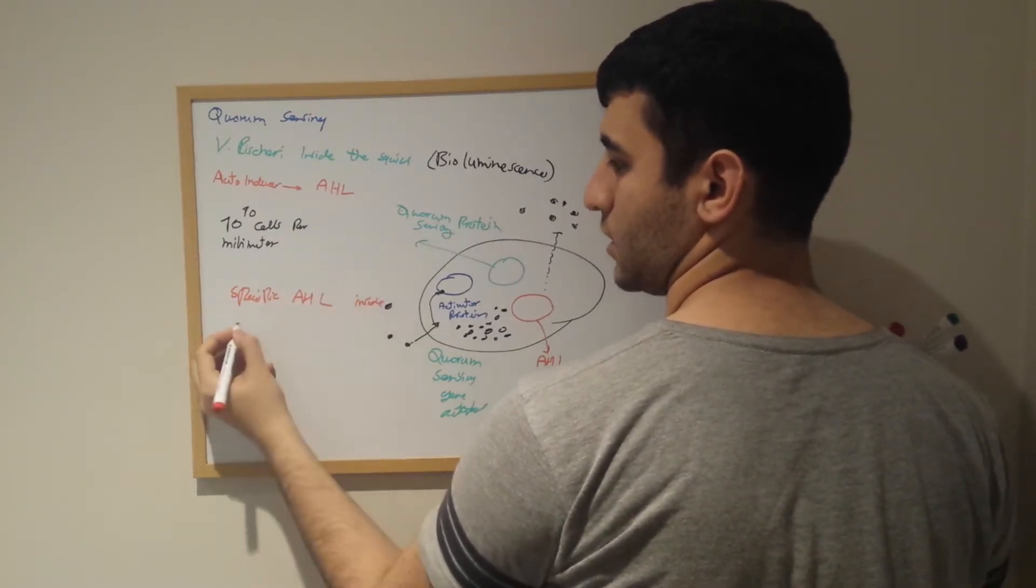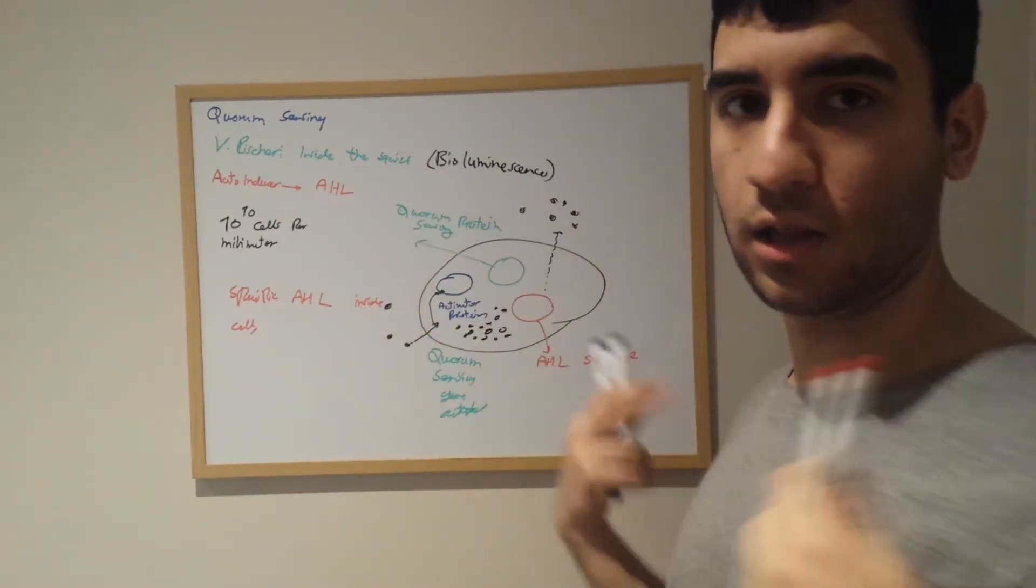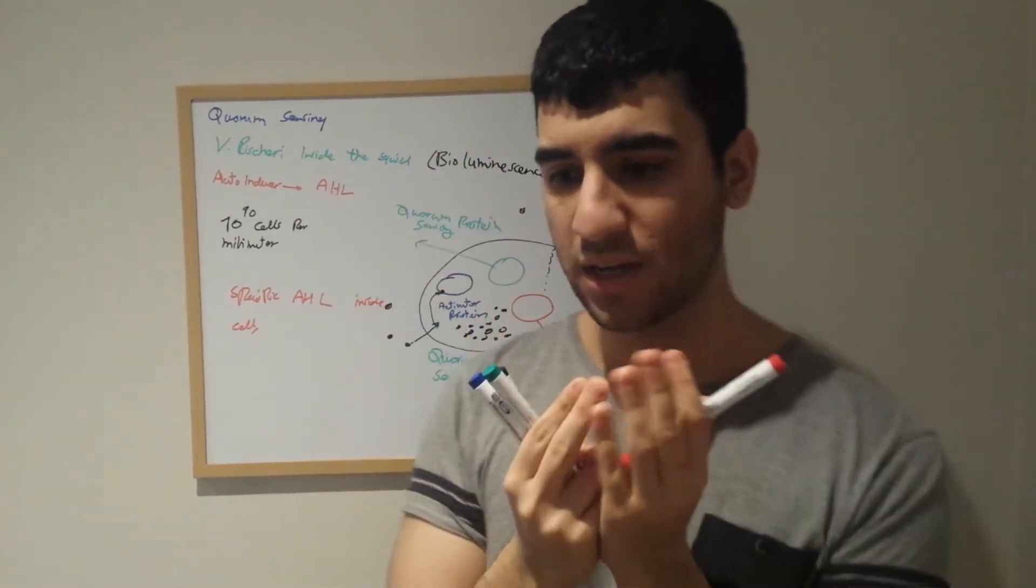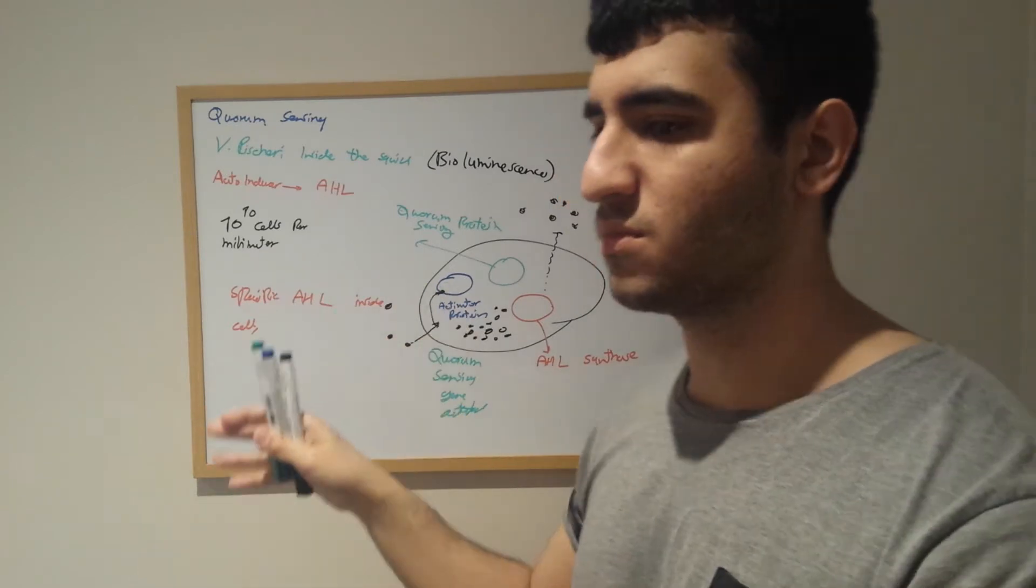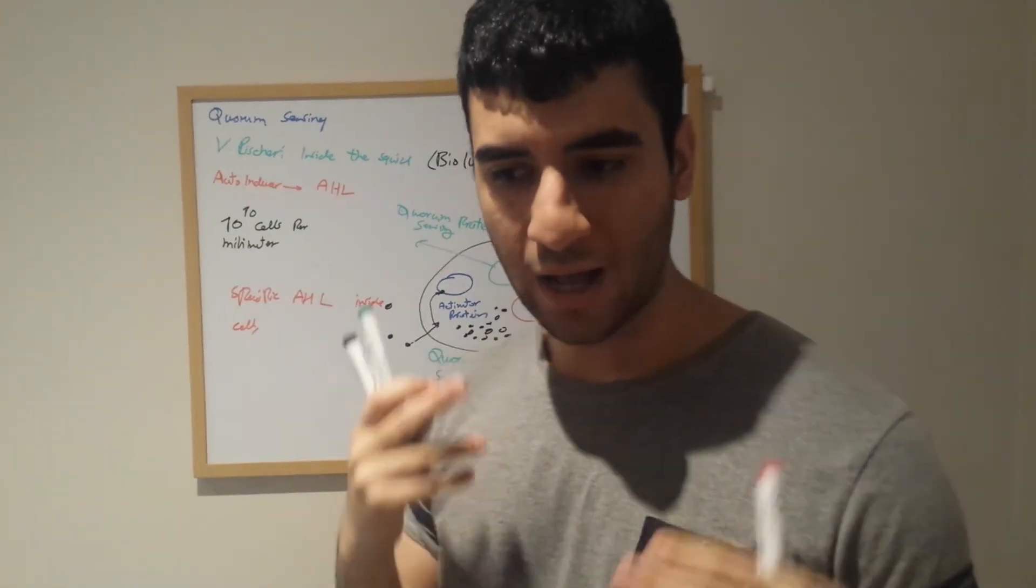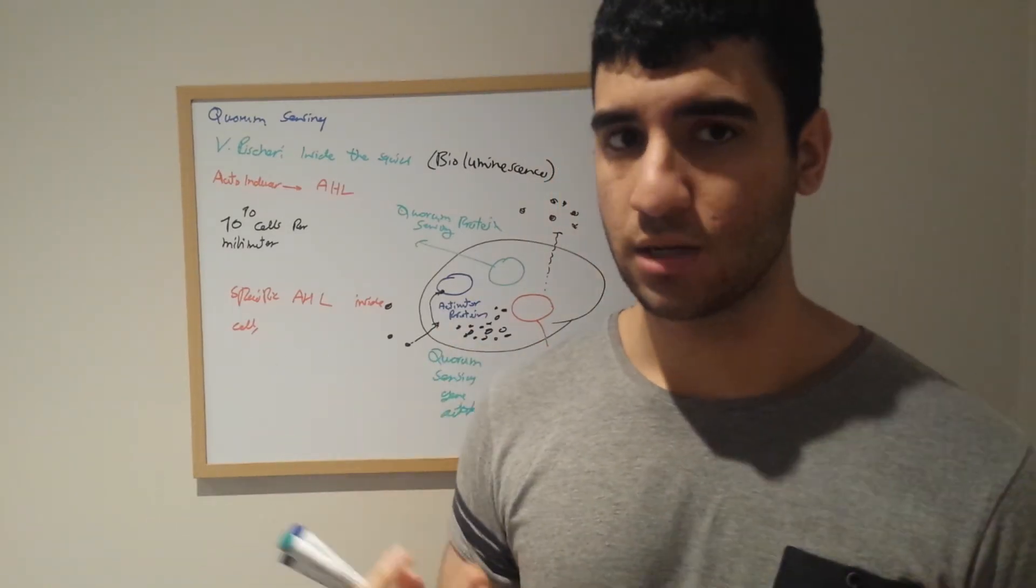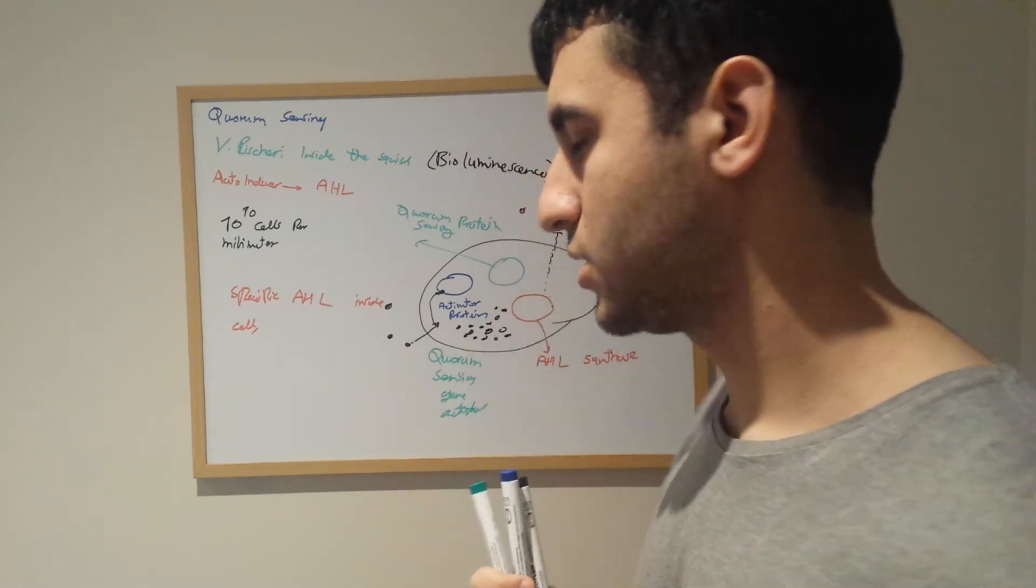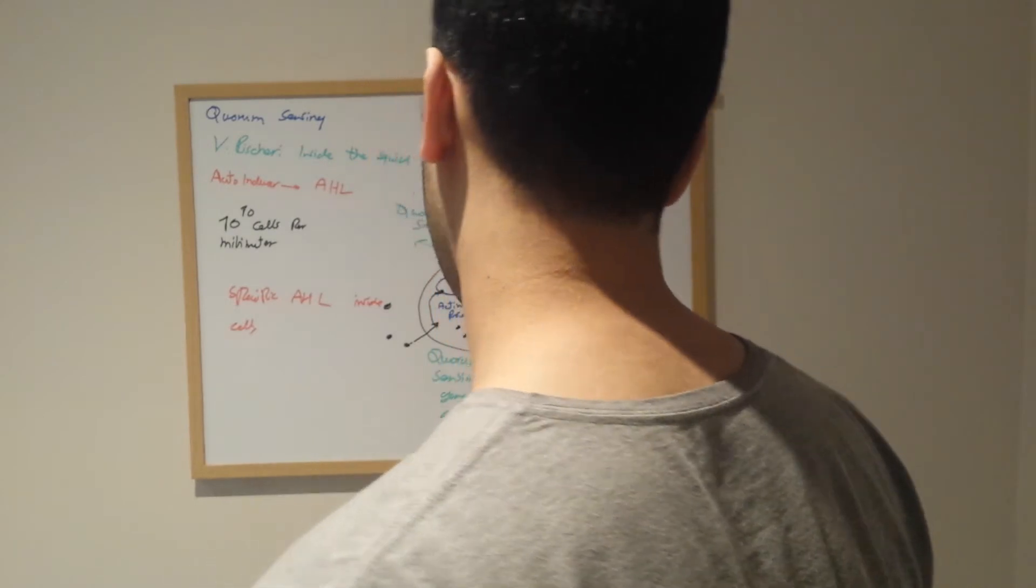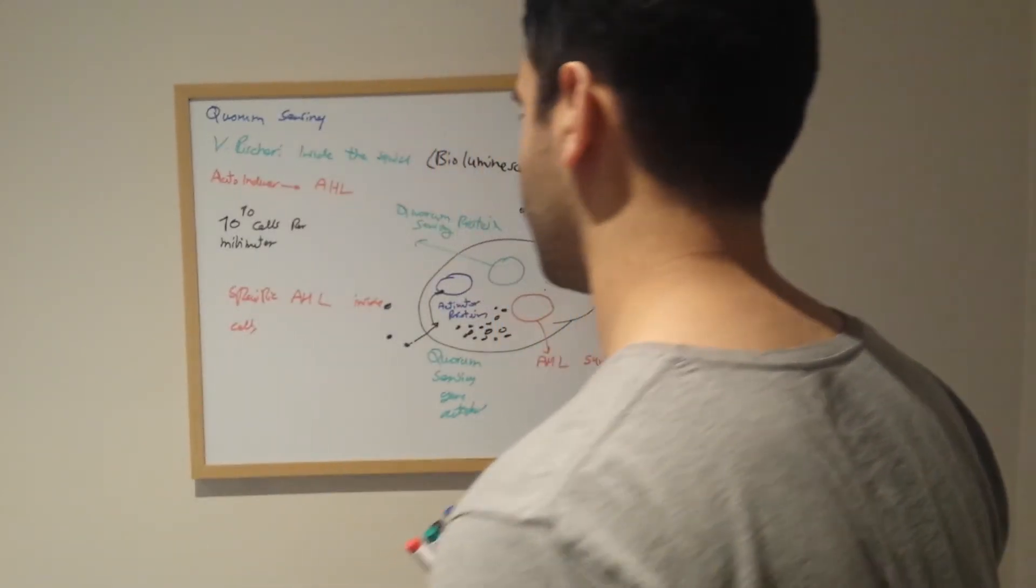This is how we see quorum sensing work. They communicate with each other. The light doesn't just glow by itself - conditions need to be met. Otherwise there would be a waste of energy, but this ensures the most saving of energy and the most efficient process.